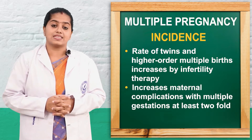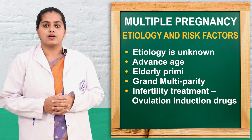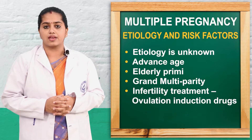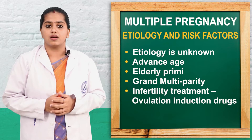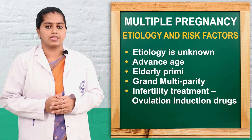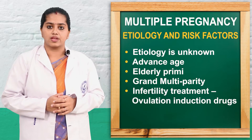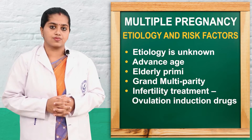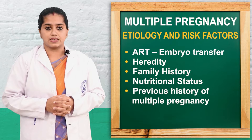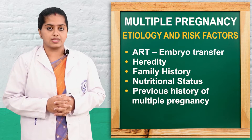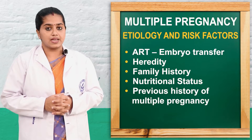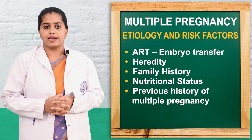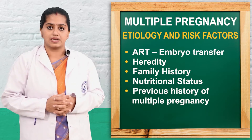Next we will discuss about the etiology. The major etiology is unknown, and race is a factor — in Negroes, 1 in 20 pregnancies can be multiple. Other factors include advanced age more than 30 to 40 years, grand multiparity with more than 5 children, previous history of multiple pregnancy, ovulation induction drugs like clomiphene citrate and gonadotrophin, artificial reproductive technology like embryo transfers, well-nourished and tall women, and hereditary family history on the maternal side.